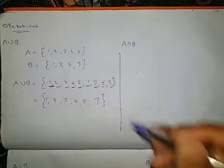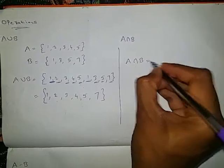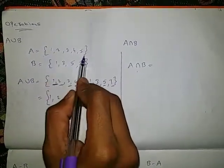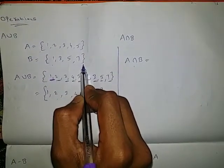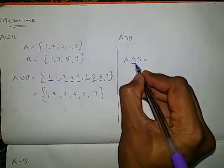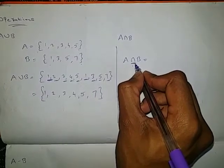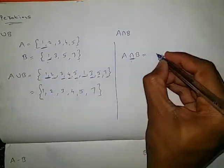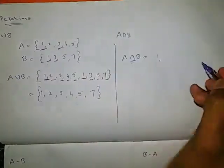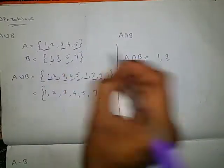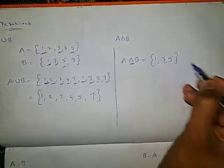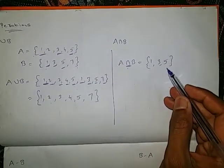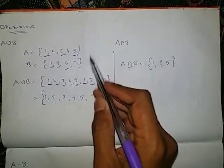Next, A intersection B — solving for the same sets A and B. A is {1, 2, 3, 4, 5} and B is {1, 3, 5, 7}. Intersection means the elements which are in common. 1 is common, so 1 comes. 3 is common, so 3 comes. 5 is common, so 5 comes. So A intersection B = {1, 3, 5} — the elements common to both sets.